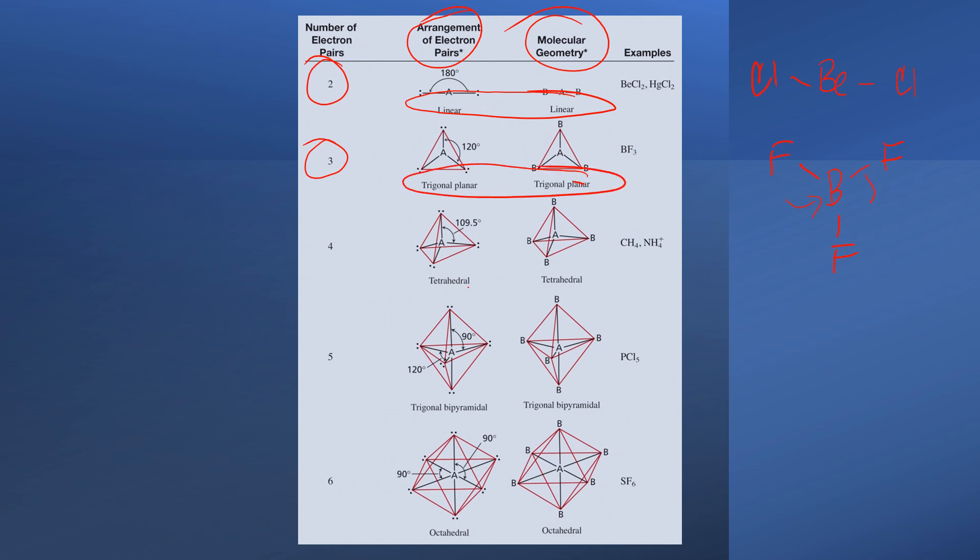Notice that each of these bond angles is 120 degrees. And actually, if we refer back to beryllium, BECL2, notice the bond angle is 180 degrees.